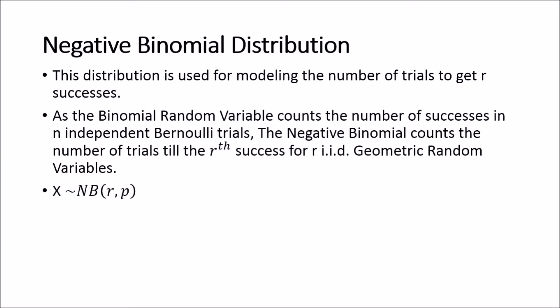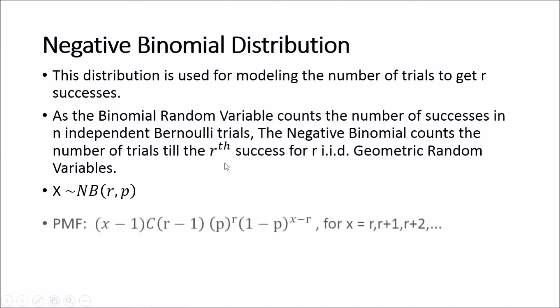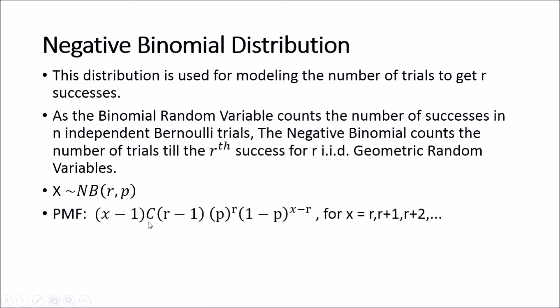So if this distribution is modeling the number of trials to get the R-th success for IID geometric random variables, then we say that random variable X follows the negative binomial distribution with R being the number of successes we wish to observe and P being the success probability. The probability mass function is given by (X−1 choose R−1) times P to the power of R times (1−P) to the power of X−R. Note its support starts from X equals R, the number of successes, because if we need three successes, we're going to need a minimum of three trials to get those three successes. So our support always starts from the number of successes that we require.